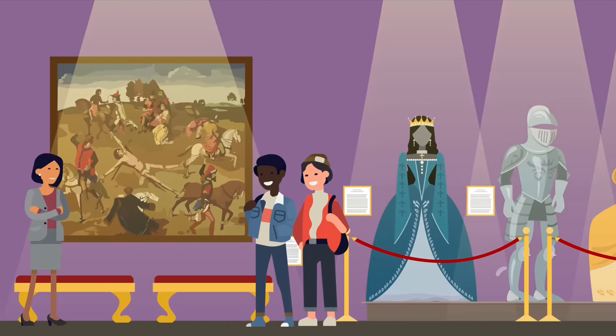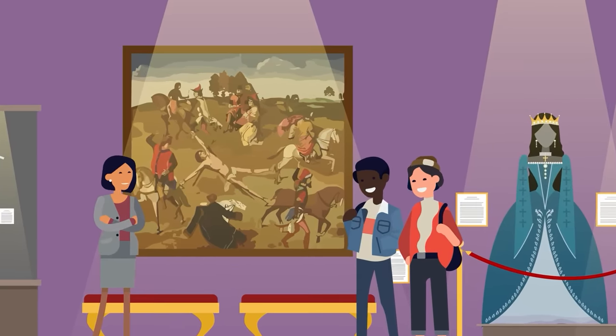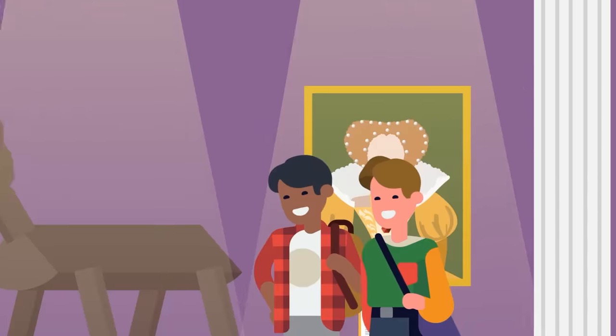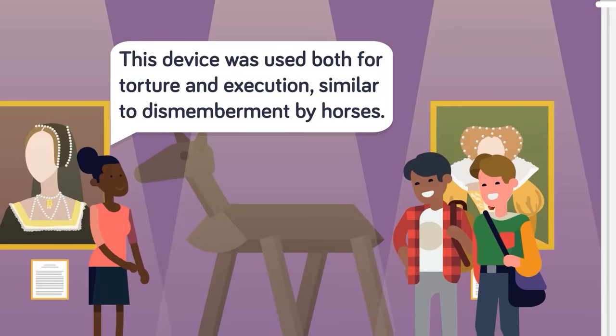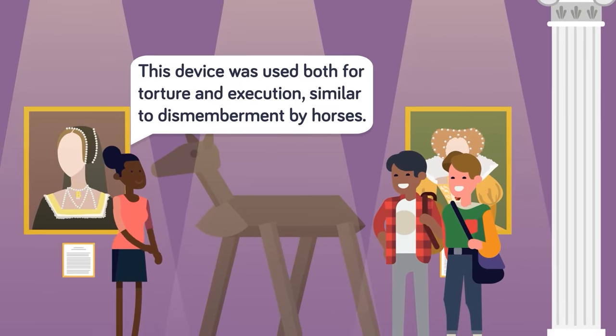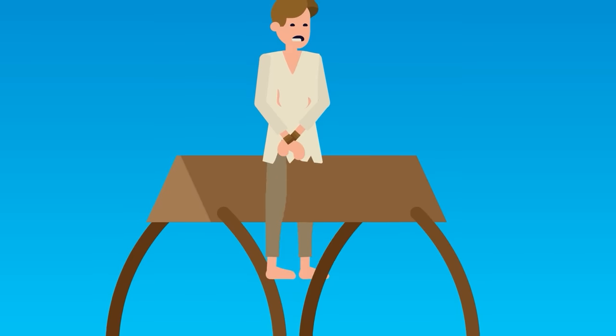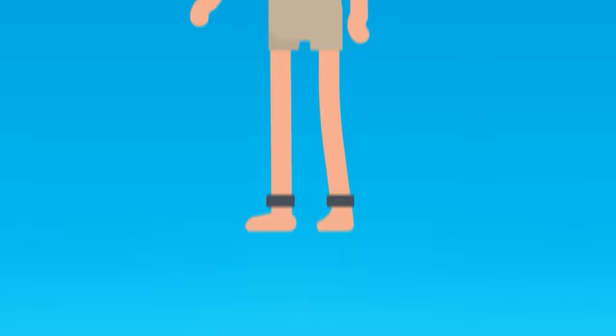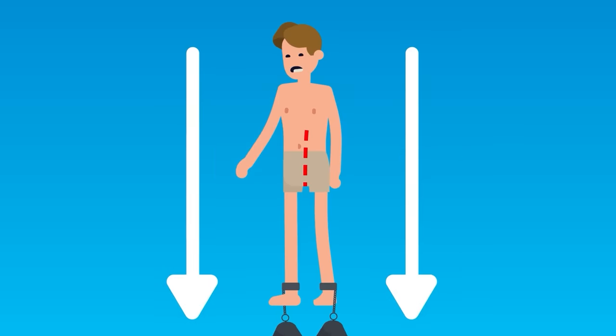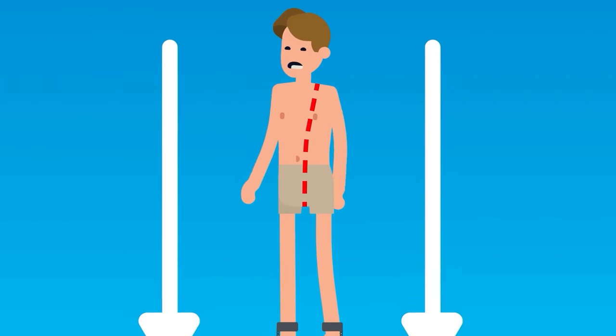Dismemberment by horses wasn't the only form of the punishment that became popular during the Middle Ages. Instead of actual horses, there existed a torture device known as a wooden horse, or a Spanish donkey, that applied the same principle without the need to wrangle four live horses. Making its deadly debut in Spain during the 17th century, the wooden horse was utilized for both torture and execution. The device consisted of a vertical wooden board with a sharp wedge in the shape of a letter V. A person sentenced to death would have had to straddle the apparatus as if riding a horse, while weights were fastened to their ankles and additional restraints were used to stop them falling off. The weights would pull the victim downward onto the wedge until it permanently injured them, or, when used to execute someone, gradually split their body in two.